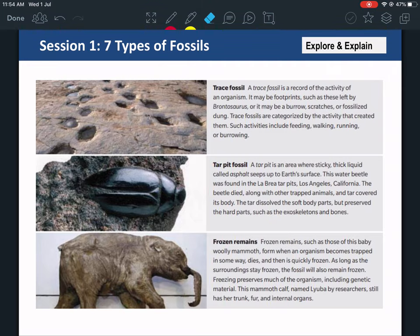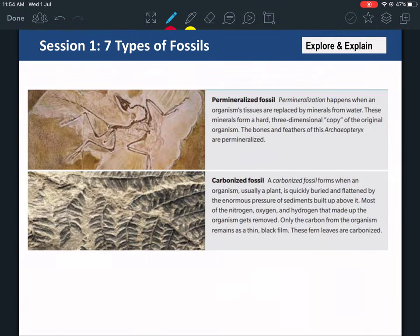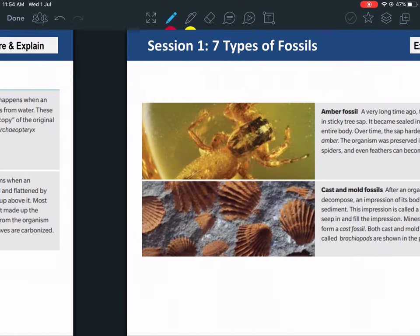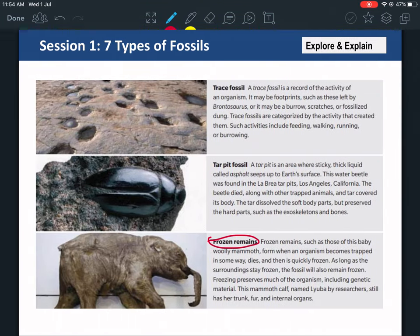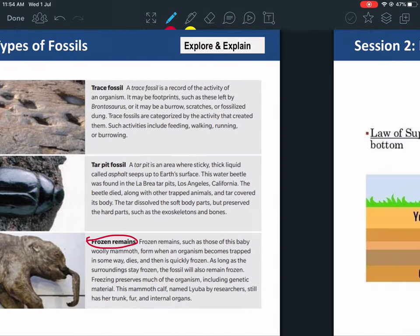So these are the seven types. Now this is important: frozen remains, casts and molds, amber fossil, carbonized fossil - these are the ones I'd like you to focus on. The other ones, you just need to know them, but I will not ask you about them in any exam.